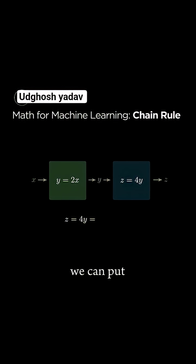As we did with our neural network, we can put our equations together by substituting y equals 2x into our second equation. Simplifying, we see that the equation for our full system is z equals 8x.